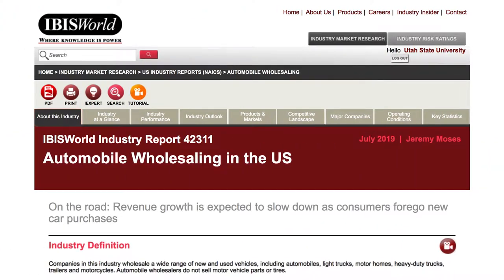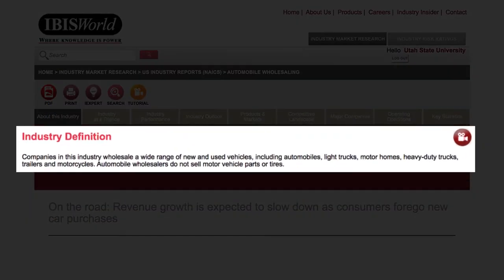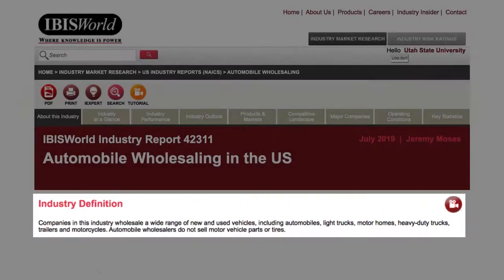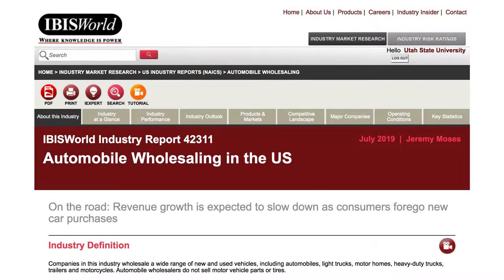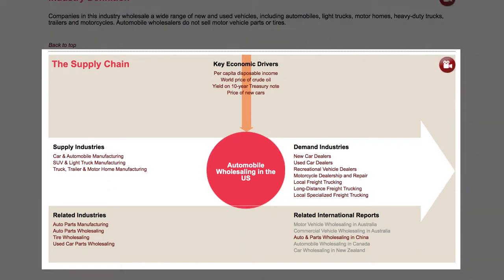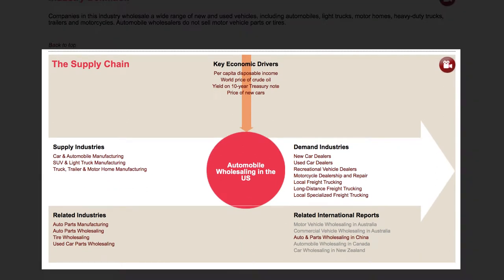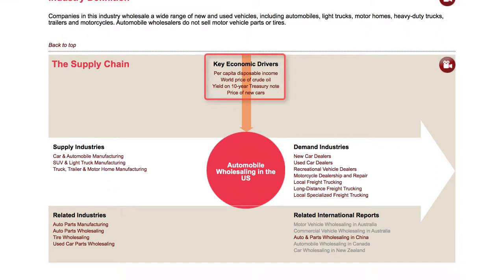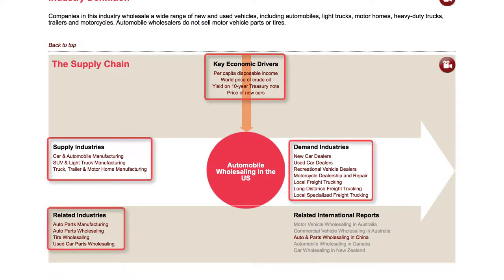The first section of a report provides a definition and overview of the industry, which helps to set up an understanding of the industry. The most important part of this section is the supply chain. The supply chain provides an overview of the industry's key economic drivers, suppliers, demand, and related industries, while also giving the links to view the reports for the industry's supply chain players.